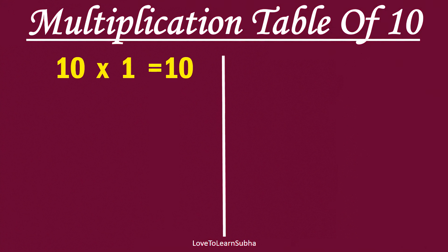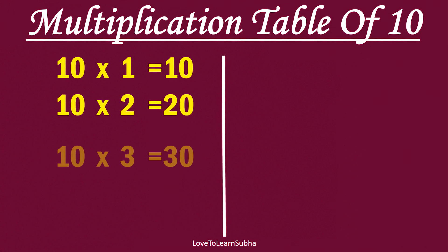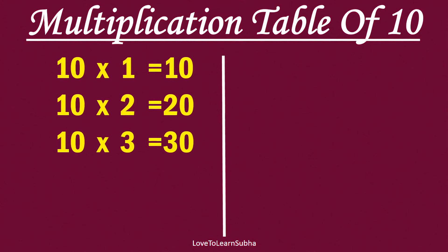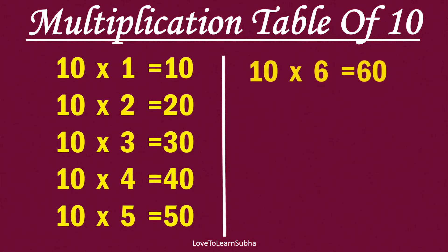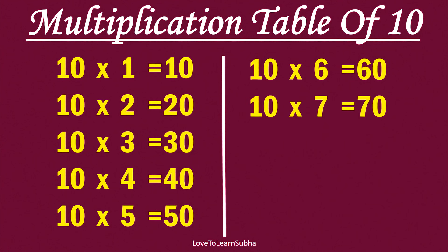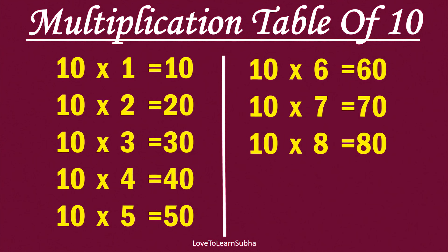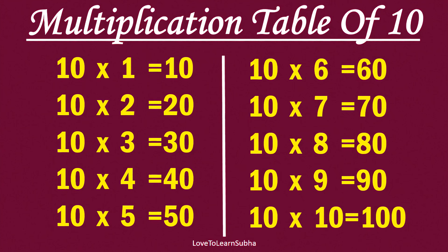Multiplication table of 10. 10×1 is 10, 10×2 is 20, 10×3 is 30, 10×4 is 40, 10×5 is 50, 10×6 is 60, 10×7 is 70, 10×8 is 80, 10×9 is 90, 10×10 is 100.